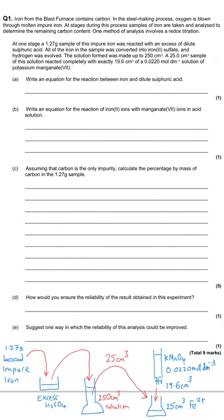Part a says: write an equation for the reaction between iron and dilute sulfuric acid. Whenever you react a metal with an acid you always make a salt and hydrogen. We know from the question that we're going to make iron(II) sulfate, FeSO₄, and we also make hydrogen gas, H₂. So the equation is: Fe + H₂SO₄ → FeSO₄ + H₂.